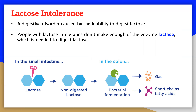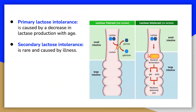At the same time, intestinal bacteria may act on the lactose to produce organic acids and gases. The buildup of water and bacterial decay products leads to abdominal distension, cramps, and diarrhea, which are symptoms of the condition. There are two types of lactose intolerance. The first is primary lactose intolerance, the most common form, caused by a decrease in lactase production with age. This form may be partially caused by genes, as it is more common in some populations than others.